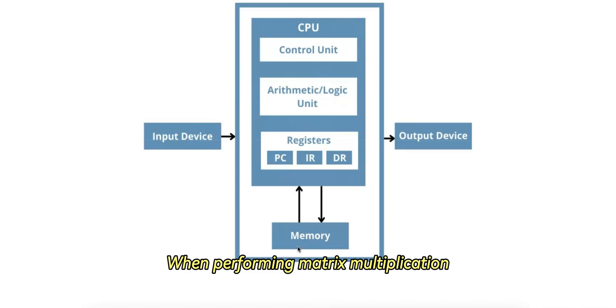When performing matrix multiplication, the CPU can't store entire matrices in registers. Instead, the matrices are stored in RAM. The CPU fetches elements from the matrices one at a time from RAM, stores them temporarily in registers, performs the multiplication, and stores the result back into RAM.